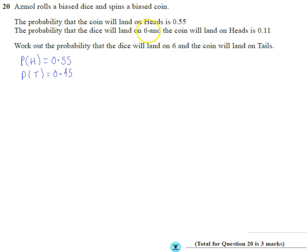The probability that the dice will land on a 6 and the coin will land on a head, so a combined one, is 0.11. So the probability of getting a 6 then a head is 0.11.